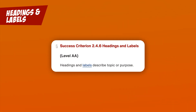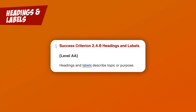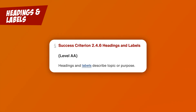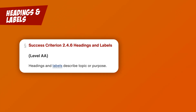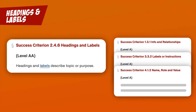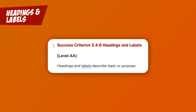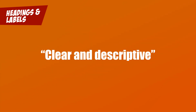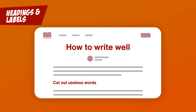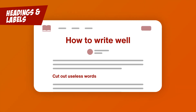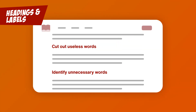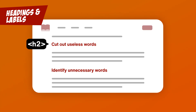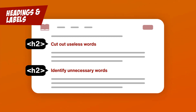Headings and Labels. Let me start by saying this one is a little confusing because of how WCAG is laid out. This isn't about using them, or correctly identifying what's a heading and what is a label in your code — there are literally three other success criteria that cover those things independently. This one is here to remind you that if you do use headings and labels, they really do need to be good, or to use their language, clear and descriptive. Let's use the W3C's example: an article on how to write well — that's your top-level heading. Then 'cut out useless words' and 'identify unnecessary words' are subheadings. It should be pretty clear what kind of content to expect in those sections.